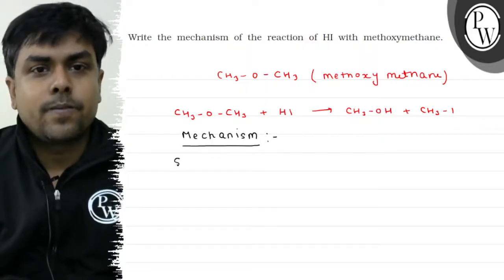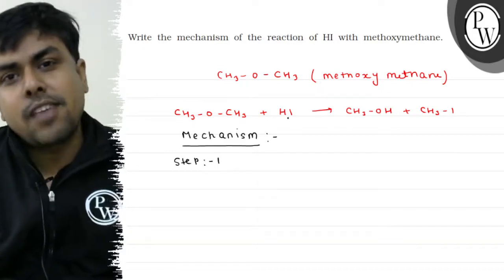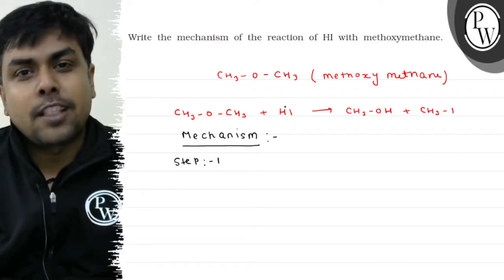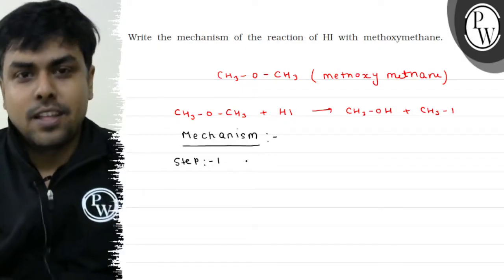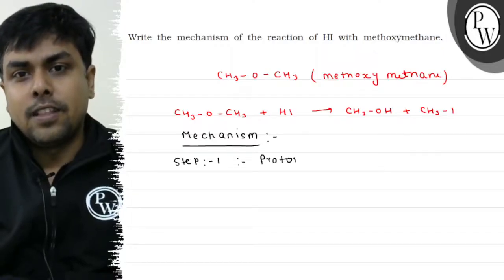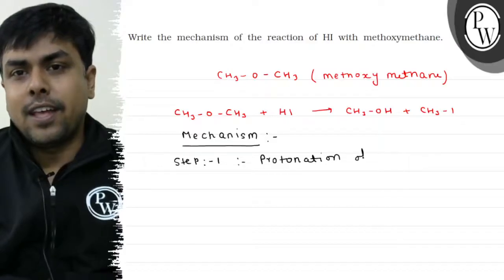Step 1: Can I say that HI is a source of H+? HI is an acid, so this will be the H+ source. Step 1 is protonation of the ether.